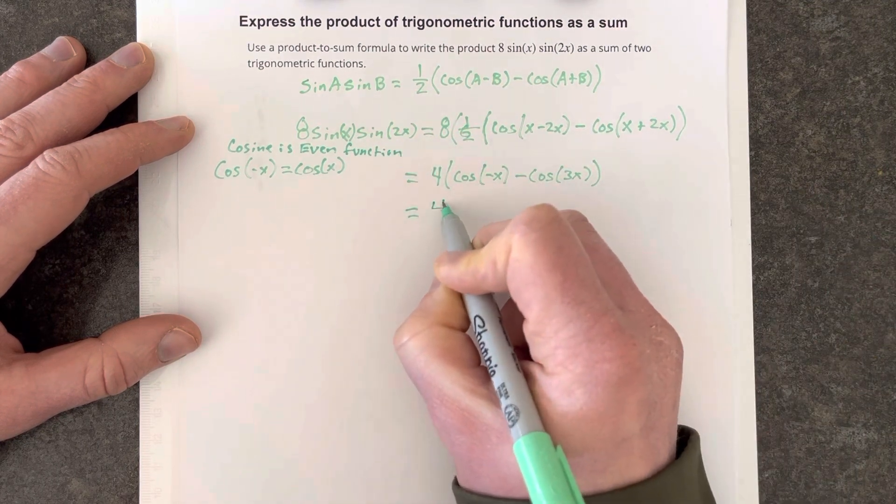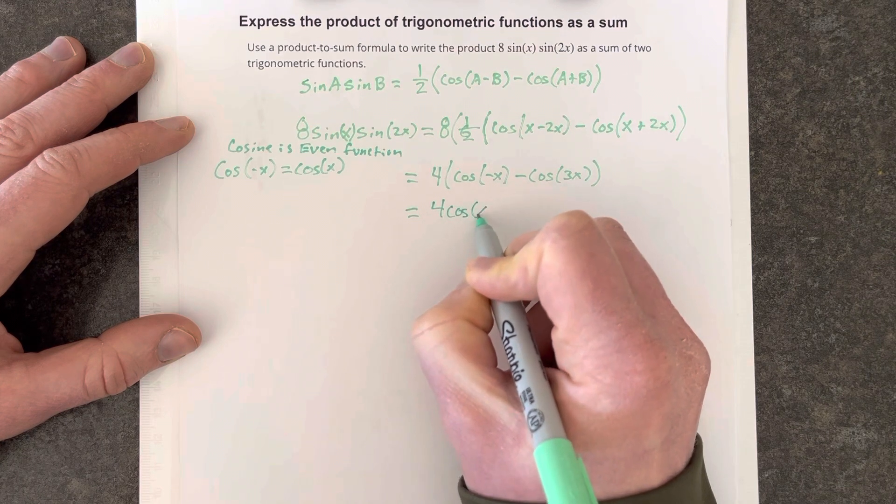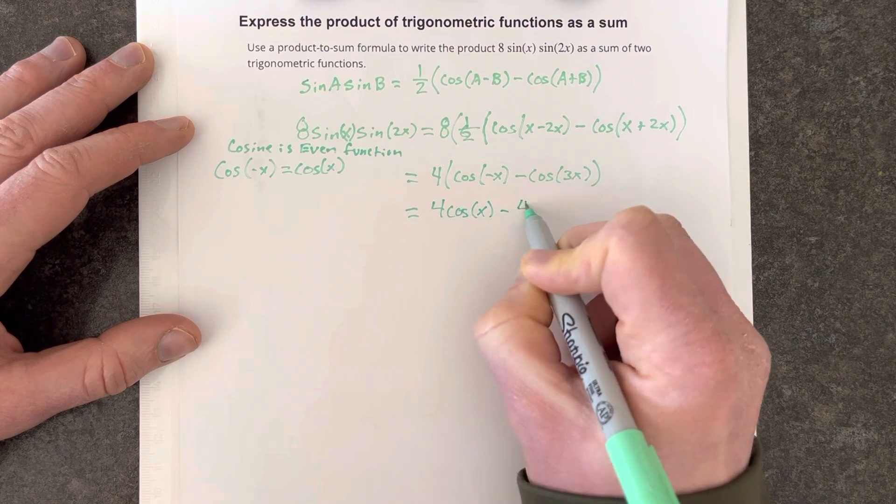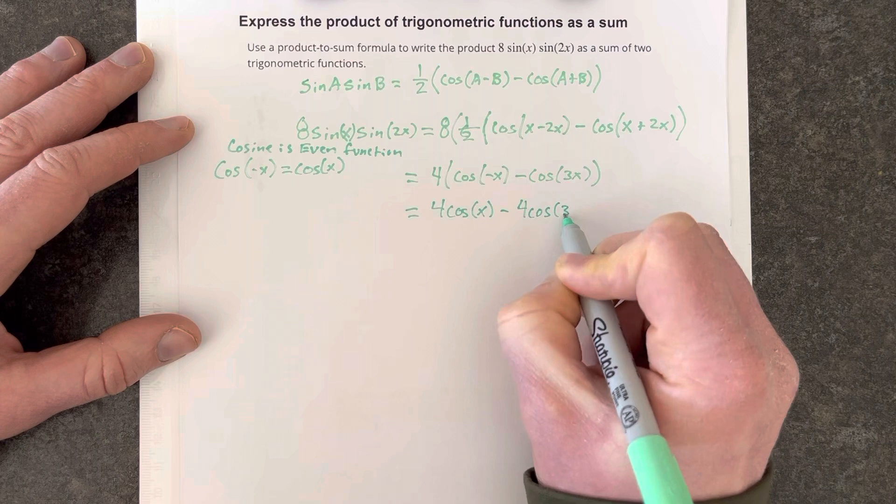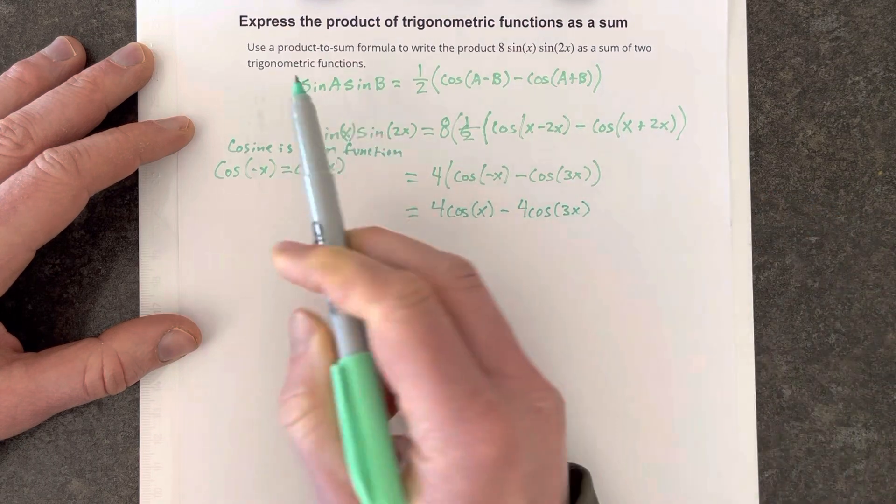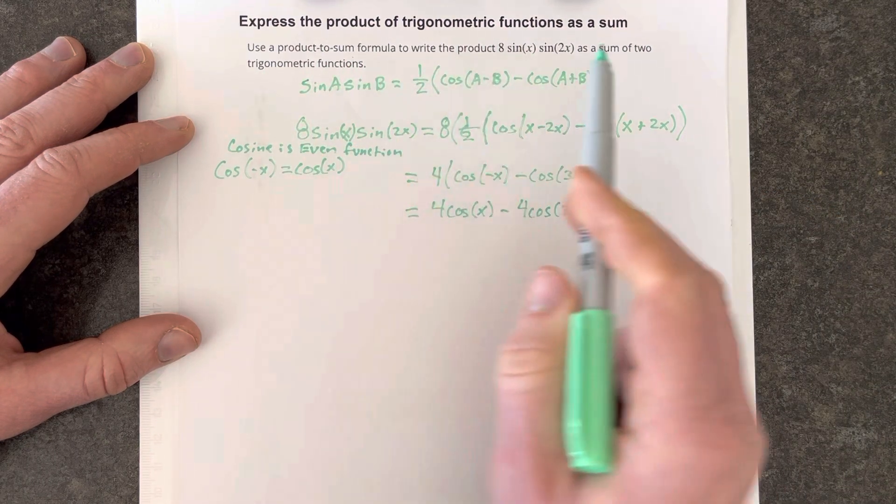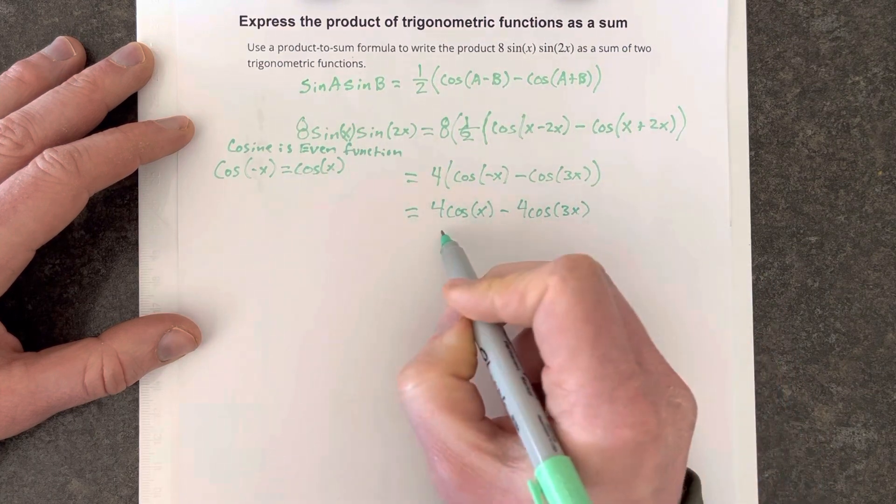So that means that we're going to write this as 4 cosine x minus 4 cosine 3x. And we've used a product-to-sum formula to write the product as a sum of two trig functions.